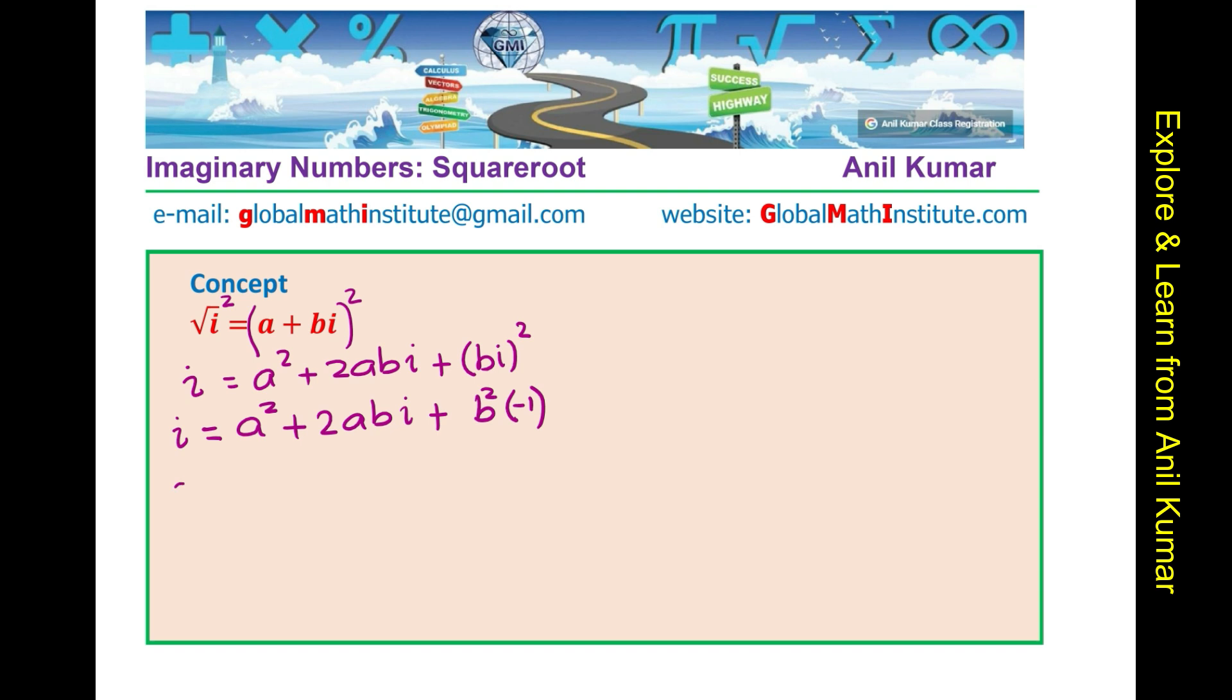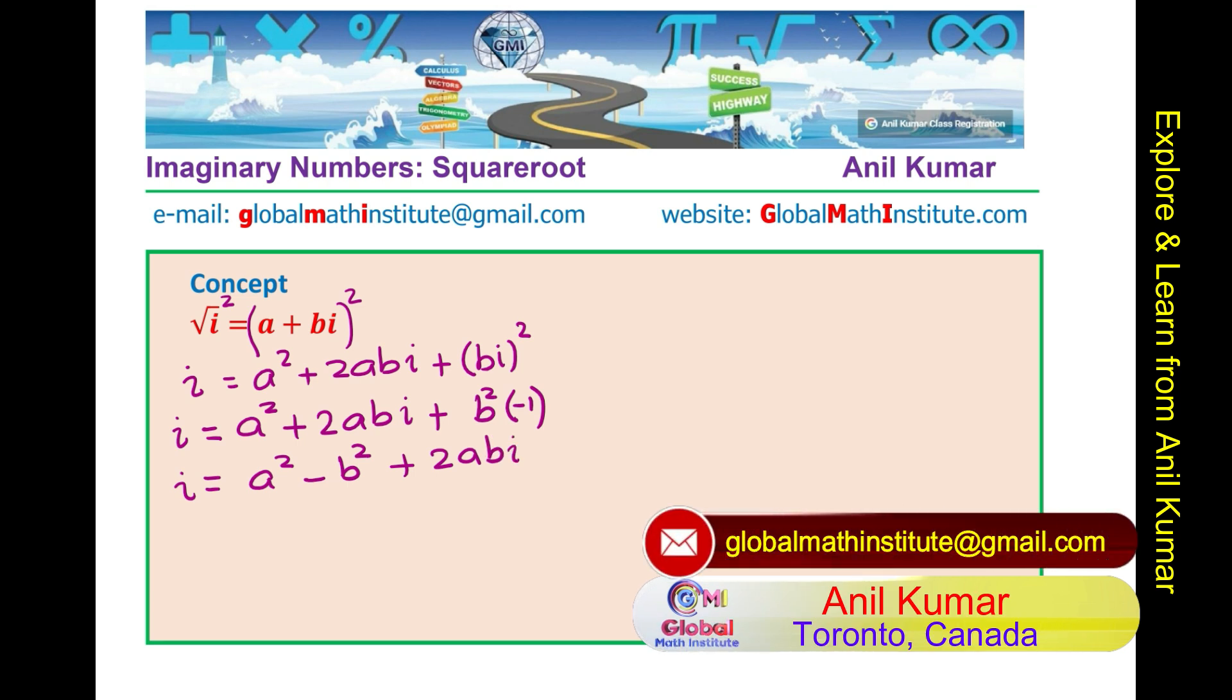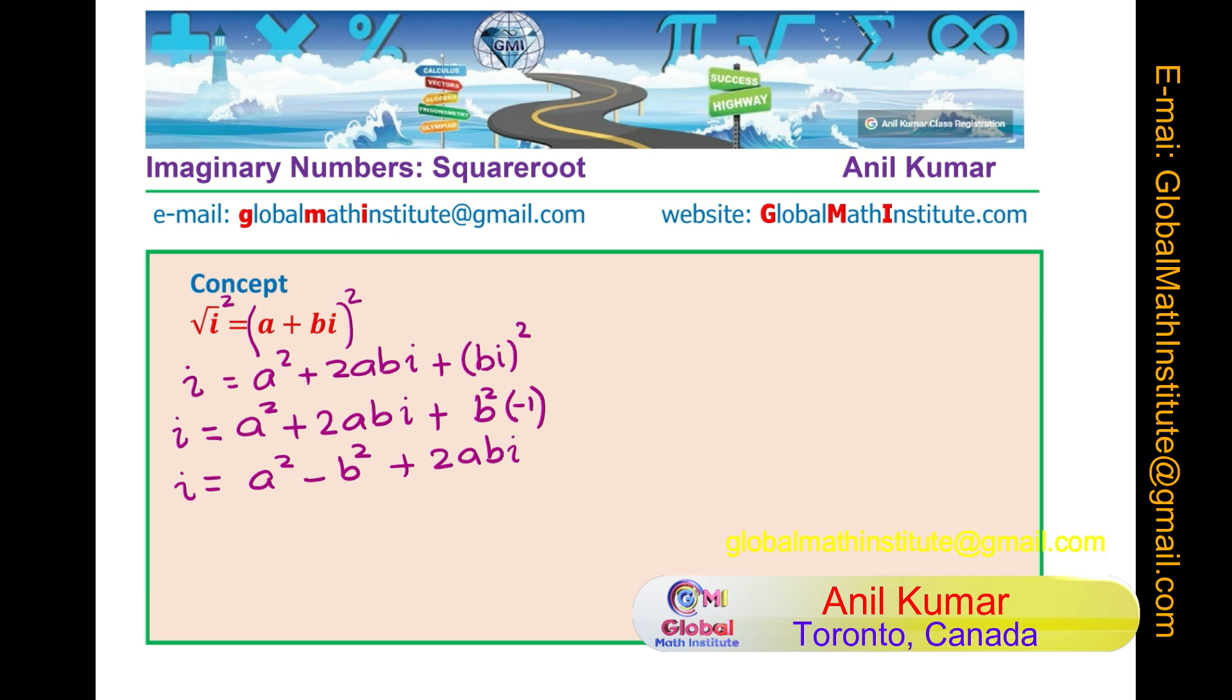So, I am writing minus 1 here. So, let us rearrange. So, we get a square minus b square, and the imaginary part 2abi. You see that. So, on the right hand side, we have a square minus b square plus 2abi. On the left hand side, we have only the imaginary part i.